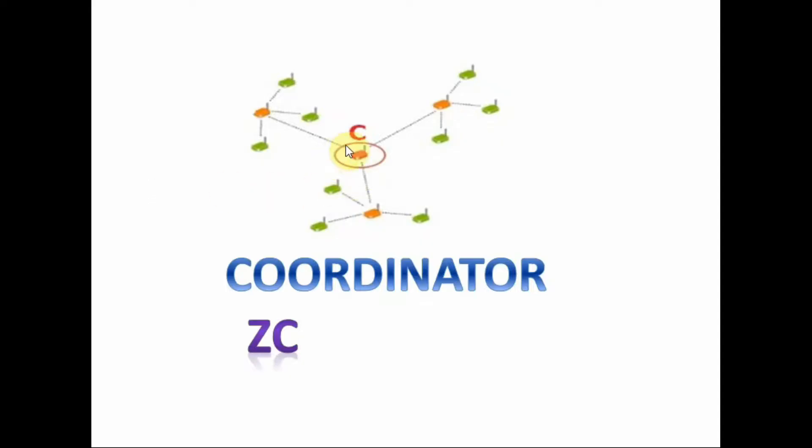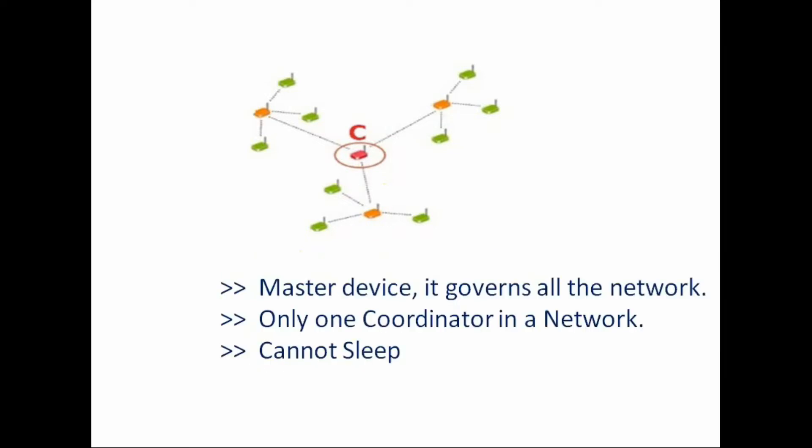There'll be only one coordinator in a network which controls the whole network. It forms the root of network tree and might bridge to other networks. Coordinator initiates a personal area network PAN by selecting an RF channel and PAN ID. ZC also allows routers and end devices to join the PAN.